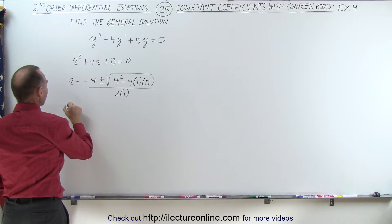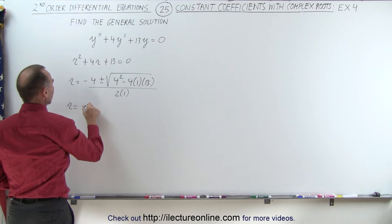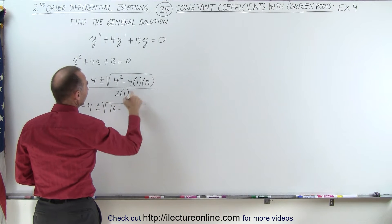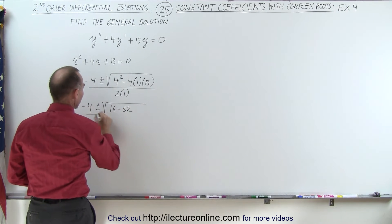Simplifying that, we get r is equal to minus 4 plus and minus the square root of 16 minus 52, divided by 2.